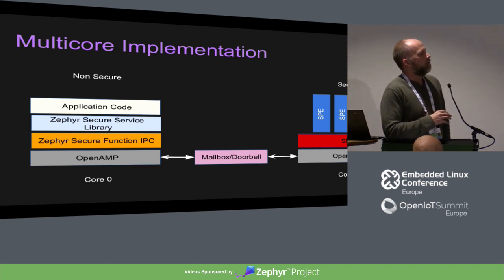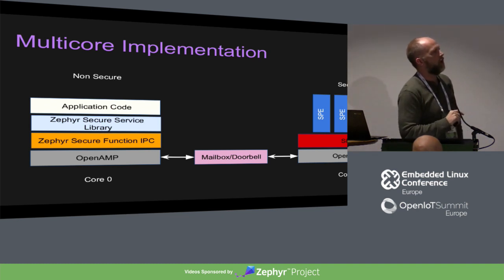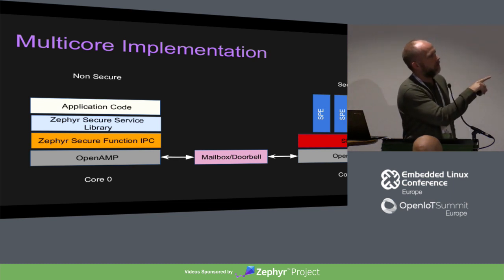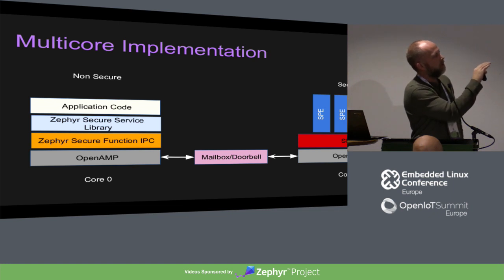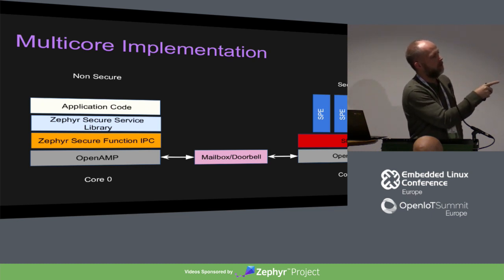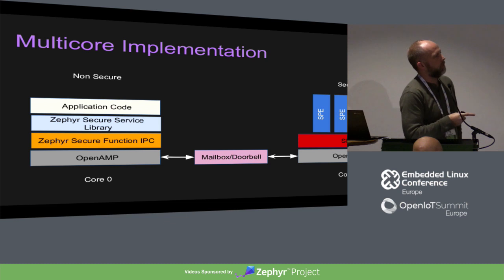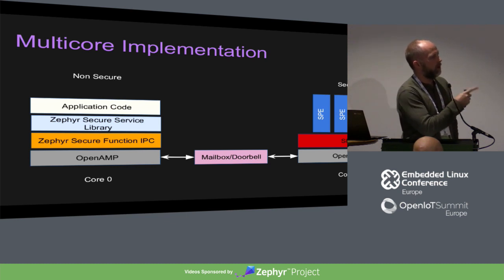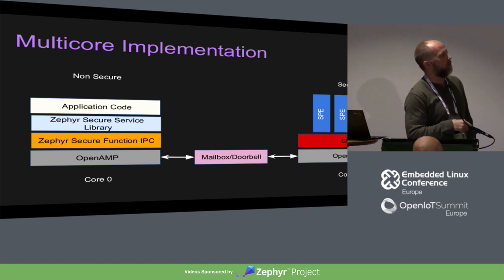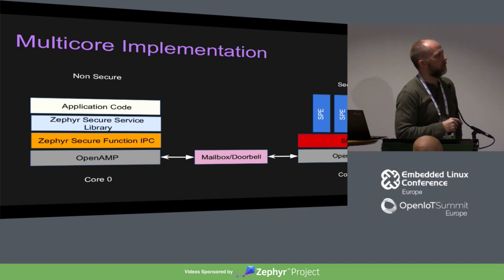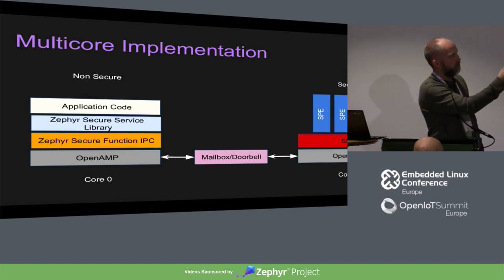In a multi-core implementation, which is also being worked on right now, it's very similar. Instead of a context switch on the same processor, you have OpenAmp at the bottom. The API is the same, but instead of doing the stub and transitioning to a different context, you're doing an IPC call across OpenAmp, which utilizes mailbox hardware and shared memory. We have a board with two M33s we're going to model this on, and we have the PSOC6 for V7M. TFM will run on both ARMv8M and V7M; the only difference is how you do the transition.